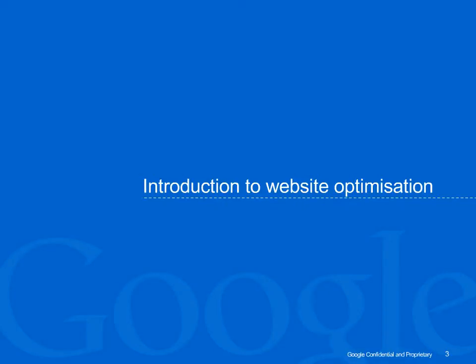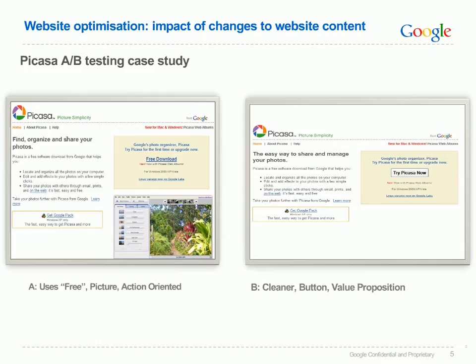We're first going to look at a general introduction to website optimization. Even if you currently think that your website is performing well, without a doubt there's always room for improvement. Let's look at an example. This A/B test was performed by our very own Google Picasa team, who decided to test their software download page.